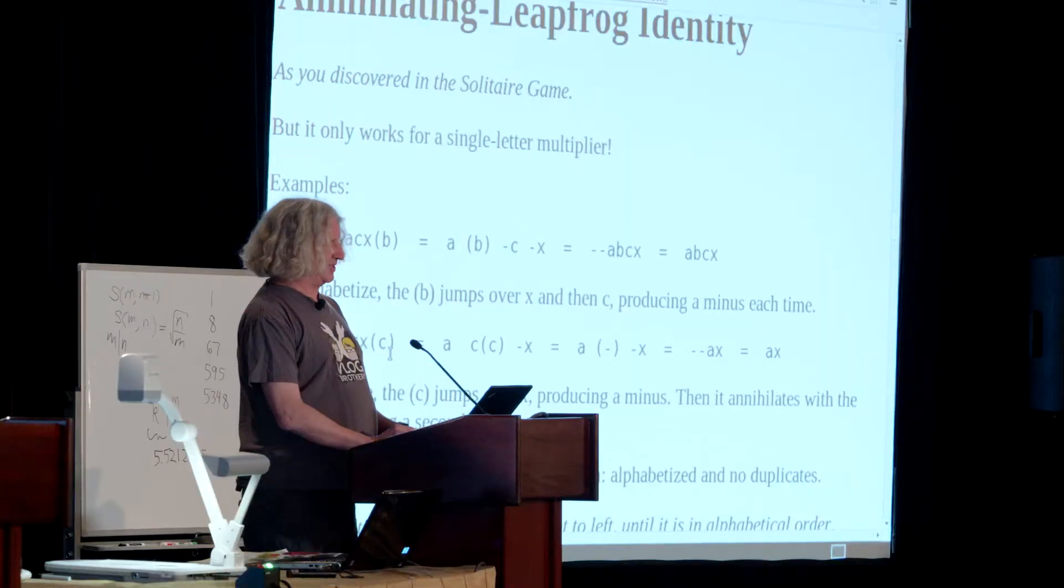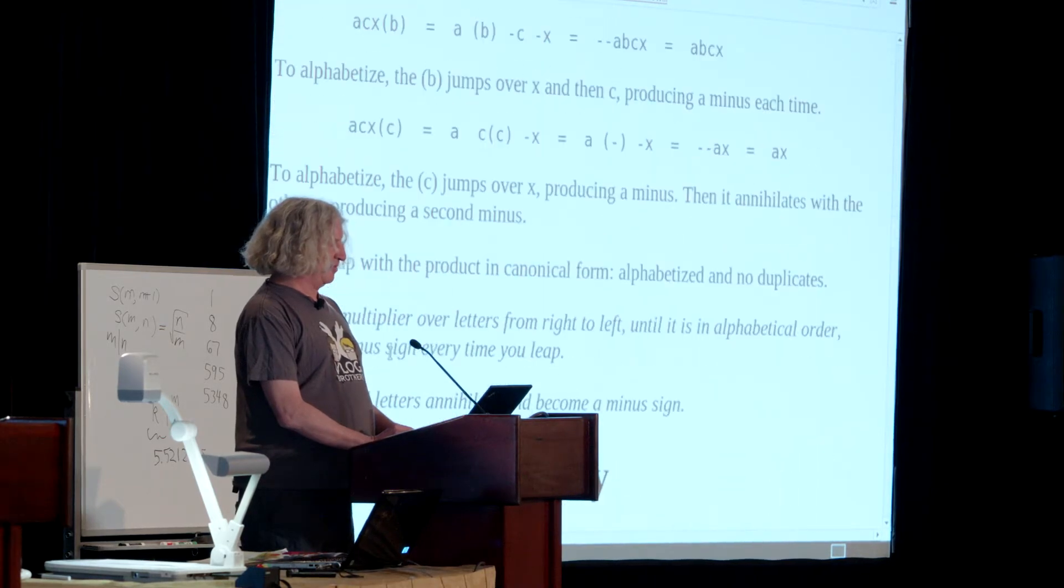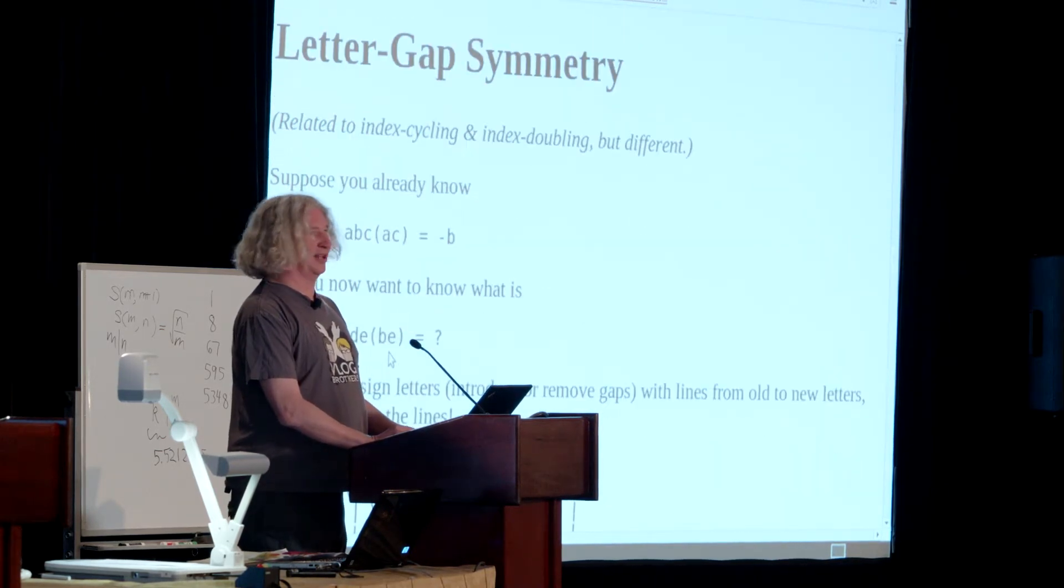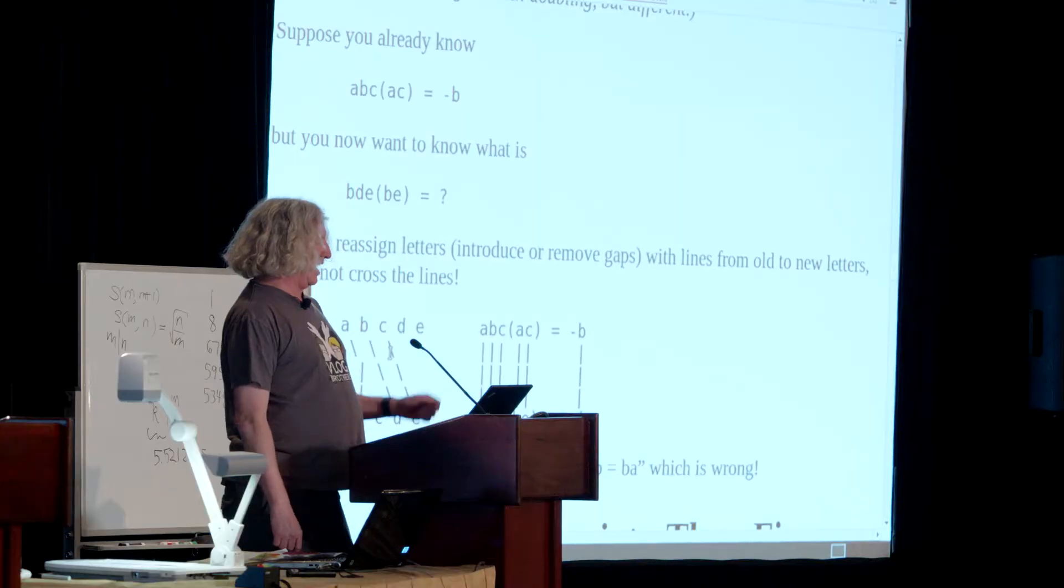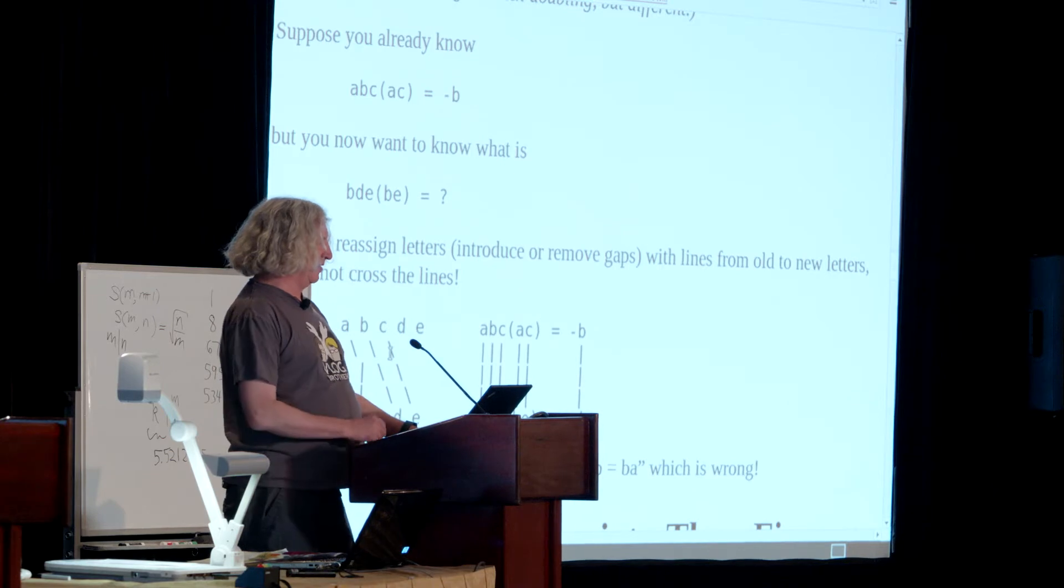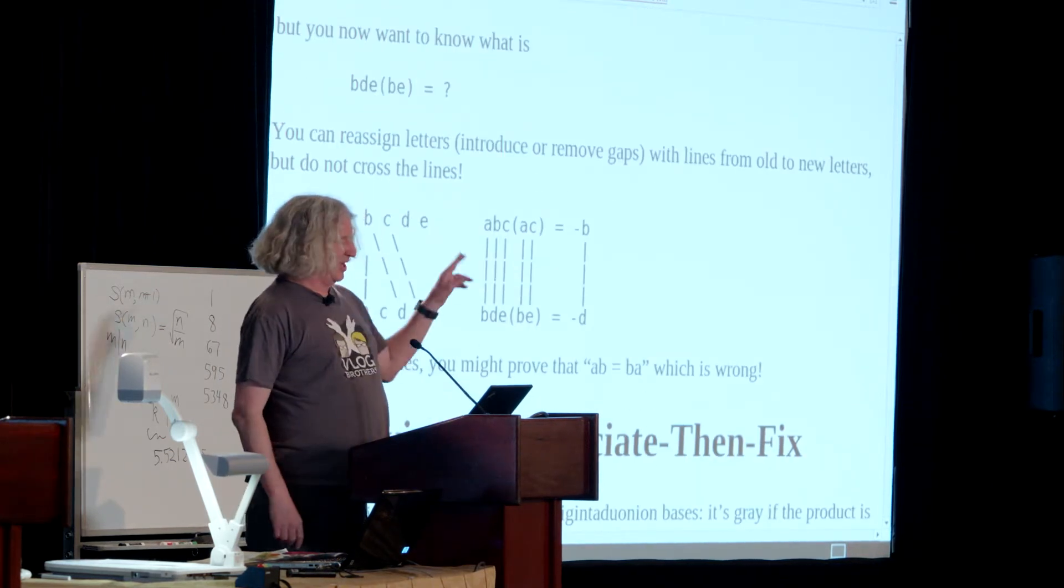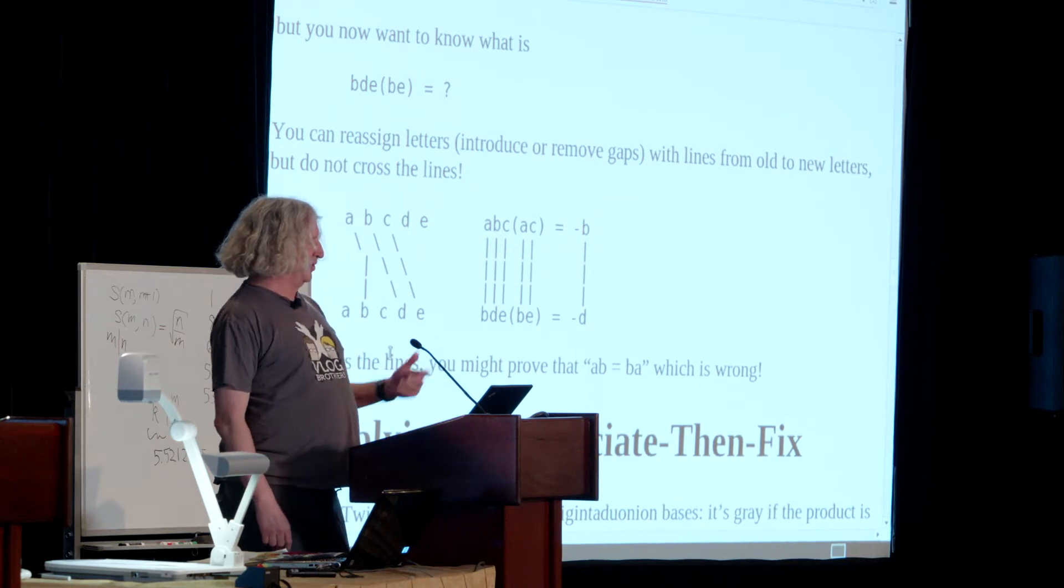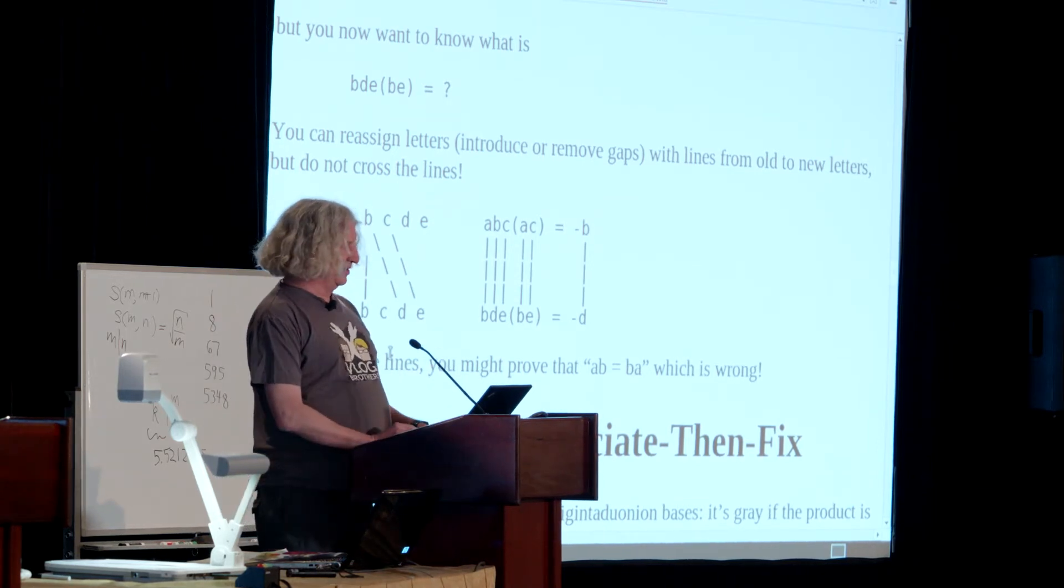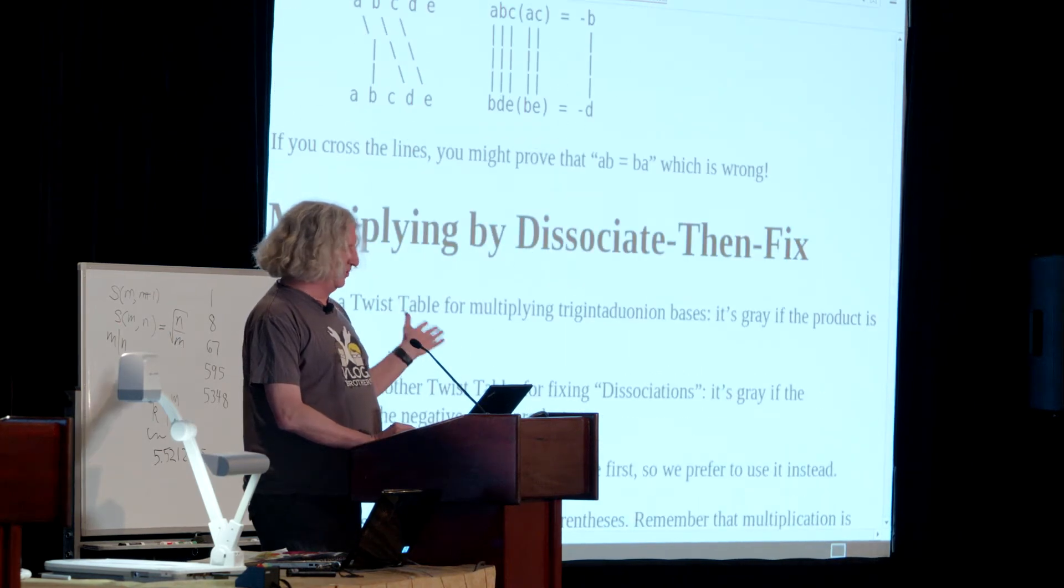My problem is I want to multiply by more than single letters. In the game, I can arrange that all the cards are single letters. Letter gap symmetry says if I know a theorem like ABC times AC equals minus B, I can change the letters as long as the mapping of letters, which you see down here, the lines don't cross. I can replace A with B, B with D, C with E. There's a couple of similar things that are known, but I haven't seen it in quite this form.